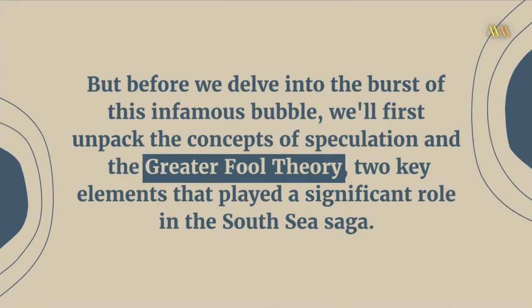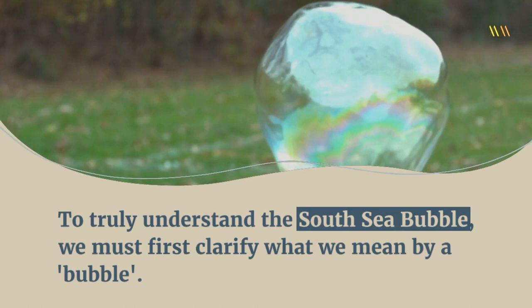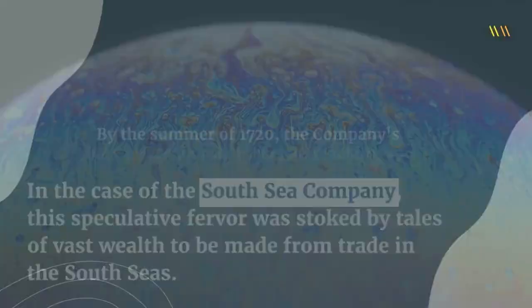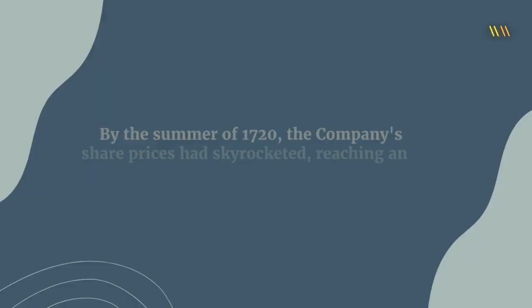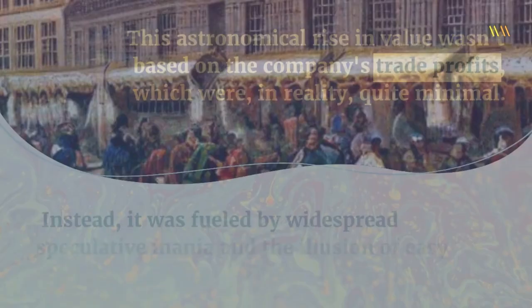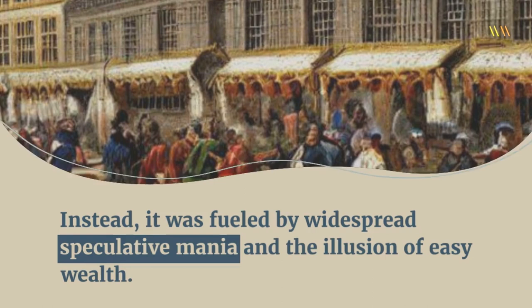To truly understand the South Sea Bubble, we must first clarify what we mean by a bubble. In financial terms, a bubble occurs when prices for a particular asset skyrocket far beyond its intrinsic value due to rampant speculation, only to crash dramatically when the unrealistic expectations driving the price upward fail to materialize. In the case of the South Sea Company, this speculative fervor was stoked by tales of vast wealth to be made from trade in the South Seas. By the summer of 1720, the company's share prices had skyrocketed, reaching an all-time high in July. This astronomical rise in value wasn't based on the company's trade profits, which were, in reality, quite minimal. Instead, it was fueled by widespread speculative mania and the illusion of easy wealth.